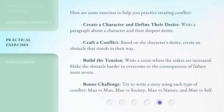Here are some exercises to help you practice creating conflict. First, create a character and define their desire — write a paragraph about a character and their deepest desire. Next, craft a conflict: based on the character's desire, create an obstacle that stands in their way. Then, build the tension by writing a scene where the stakes are increased — make the obstacle harder to overcome or the consequences of failure more severe. Bonus Challenge: try to write a story using each type of conflict — Man vs. Man, Man vs. Society, Man vs. Nature, and Man vs. Self.